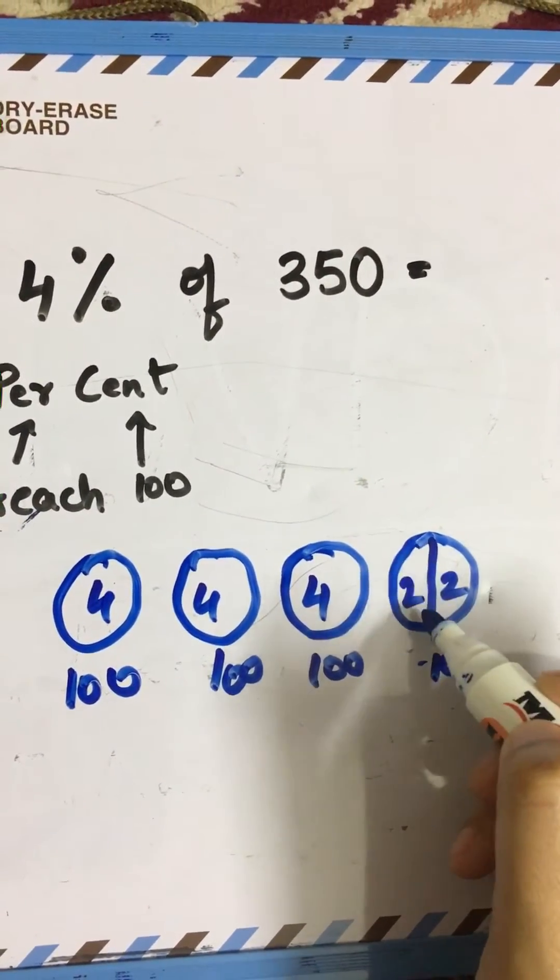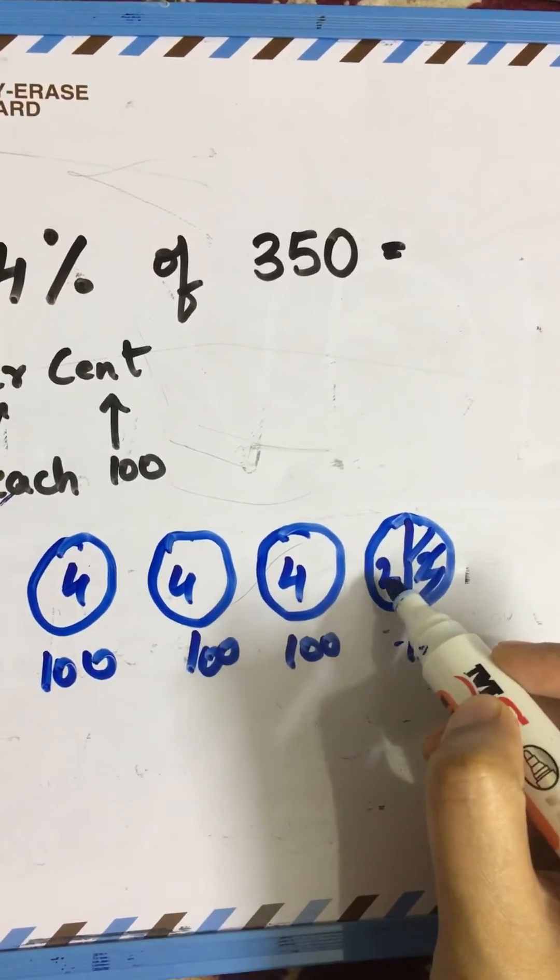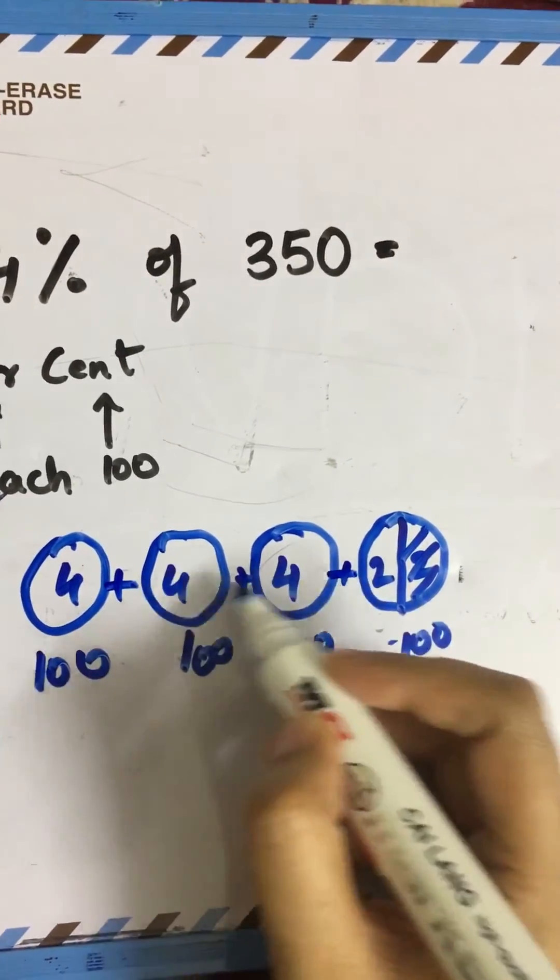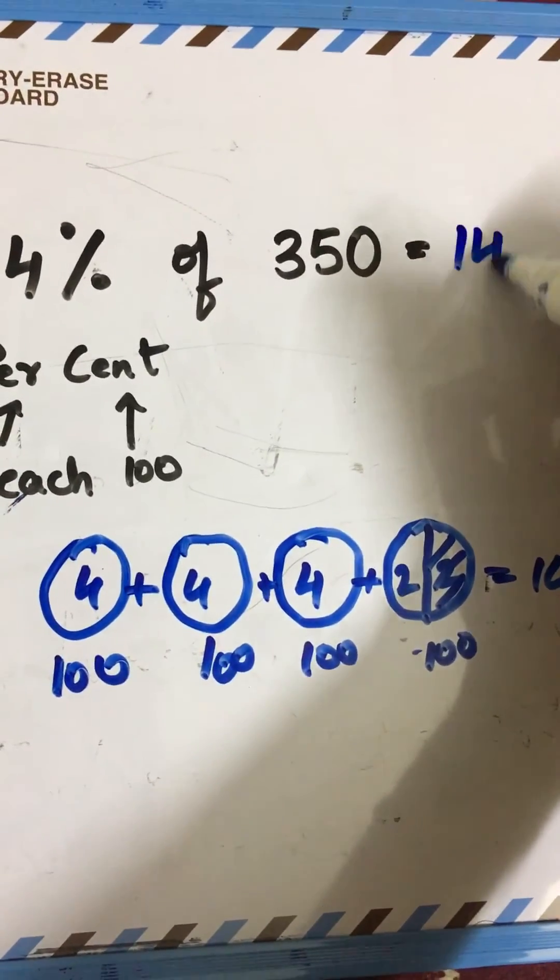We'll cancel off the half part, so we just need only two. We add up all the things: 4 plus 4 plus 4 plus 2 is 14. So your answer is 14.